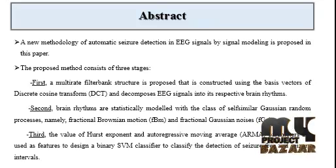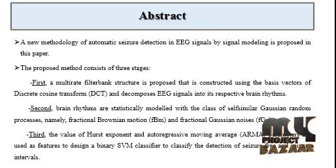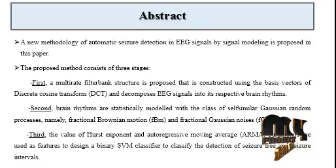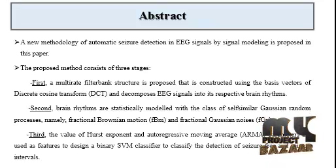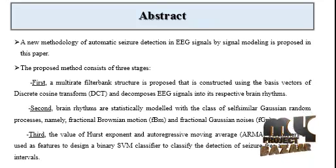Then, brain rhythms are statistically modeled with the classification of two processes: FBM fractional Brownian motion and FGN fractional Gaussian noises. Third, the value of Hurst exponent and auto-regressive moving average parameters are used as features to design a binary SVM classifier to classify the detection of seizure-free and seizure intervals.